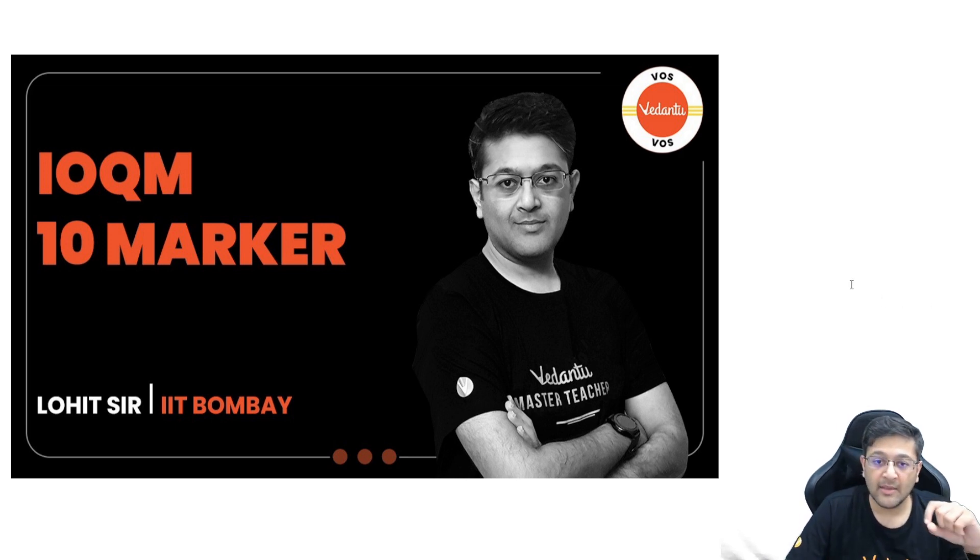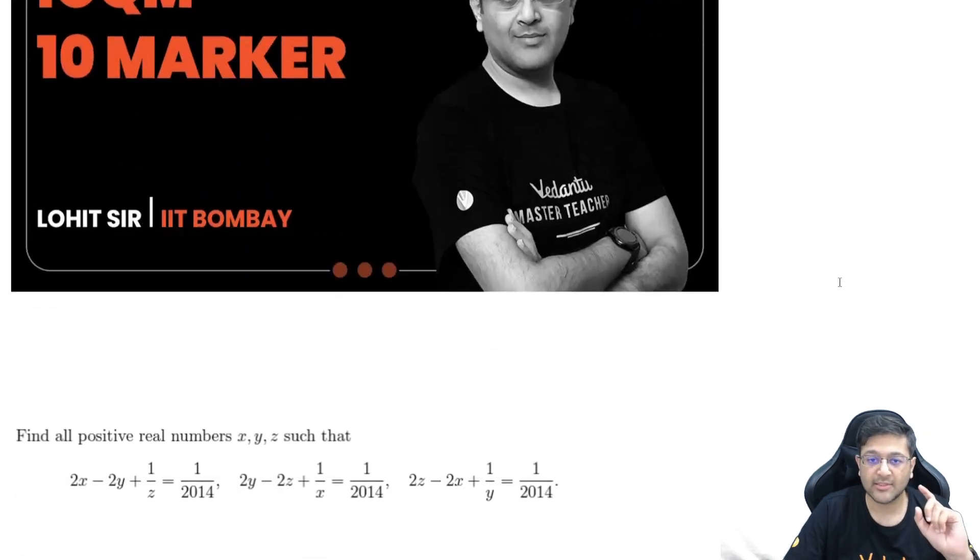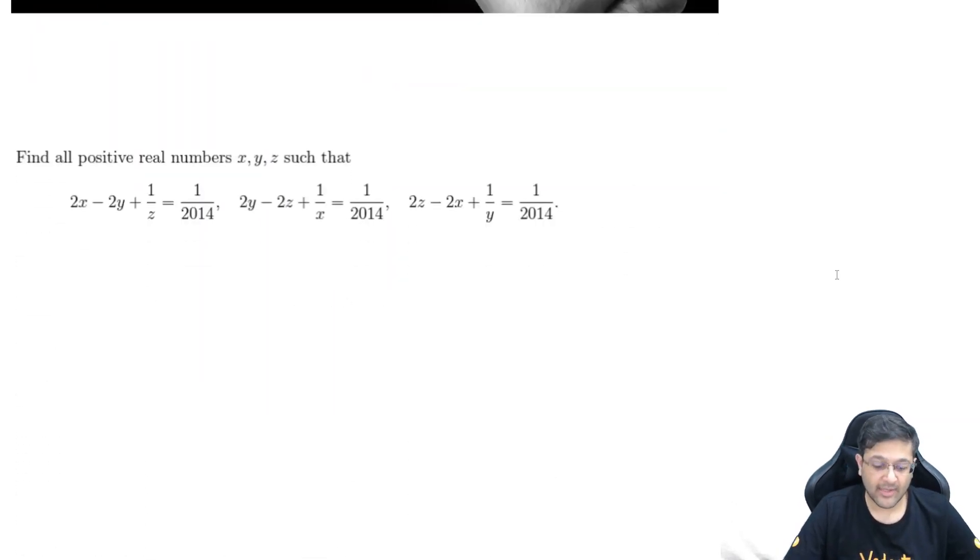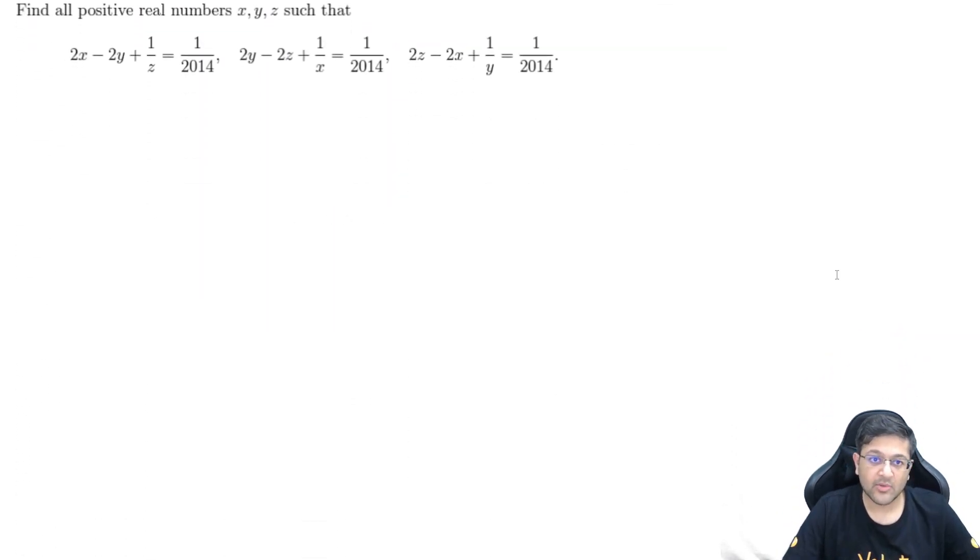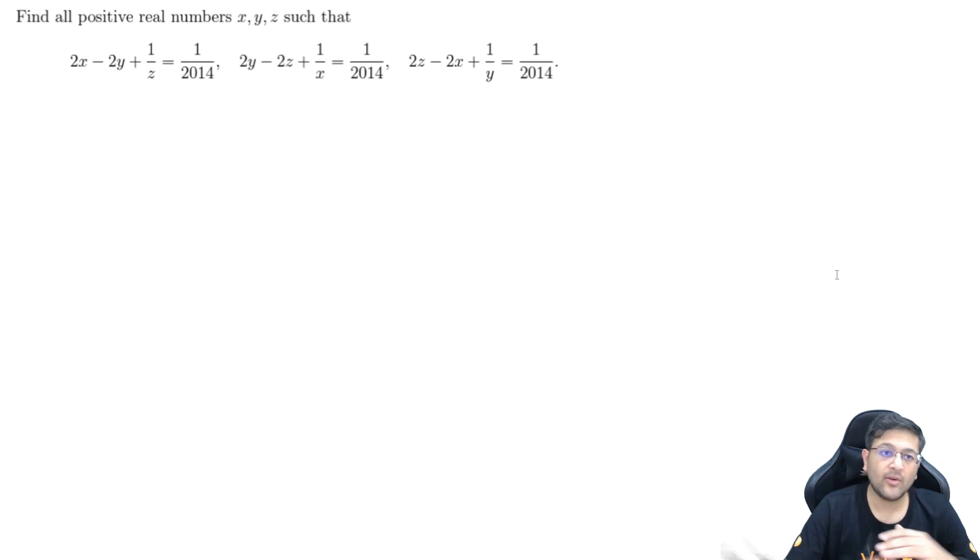So let us see this question without any delay. But yes, before starting, I would like to request you one thing guys. Please try this question by yourself first. So this is the question here. You have to find all positive real numbers x, y and z, such that these three equations are satisfied. So please guys, pause this video here and try to solve this question.